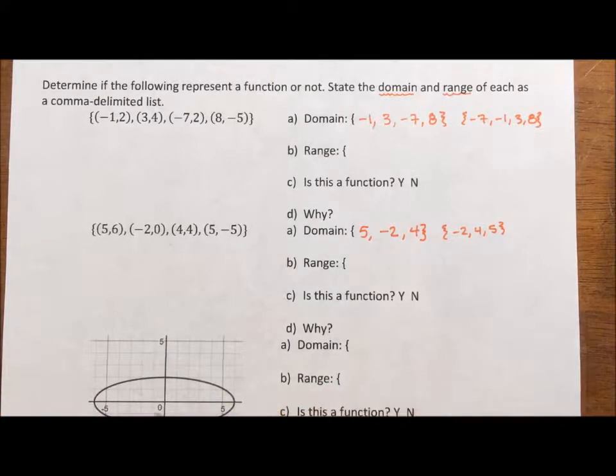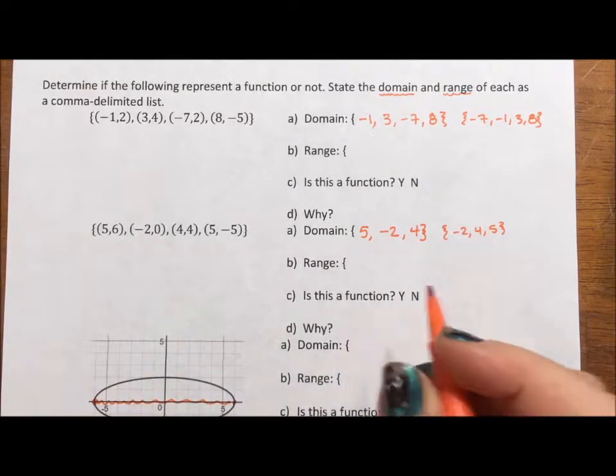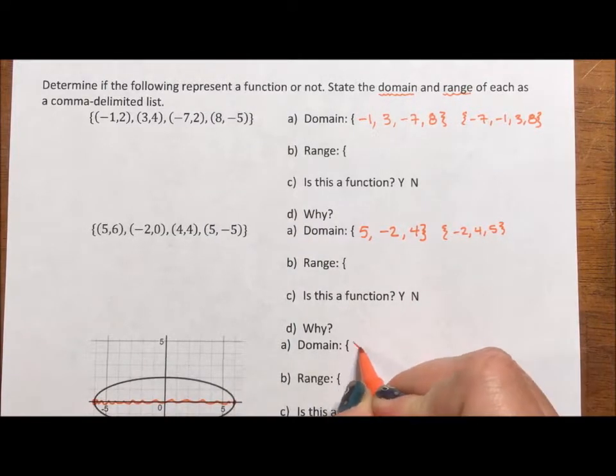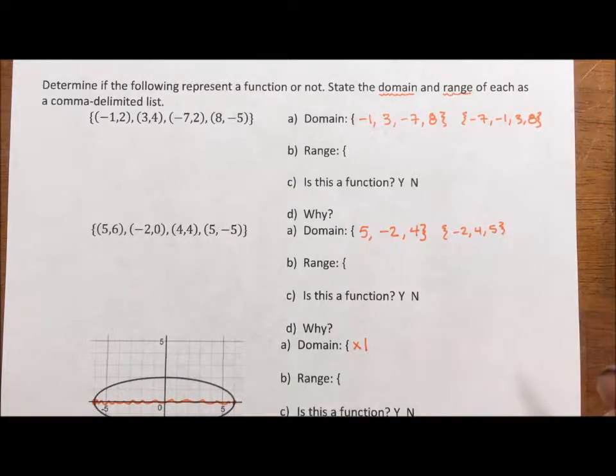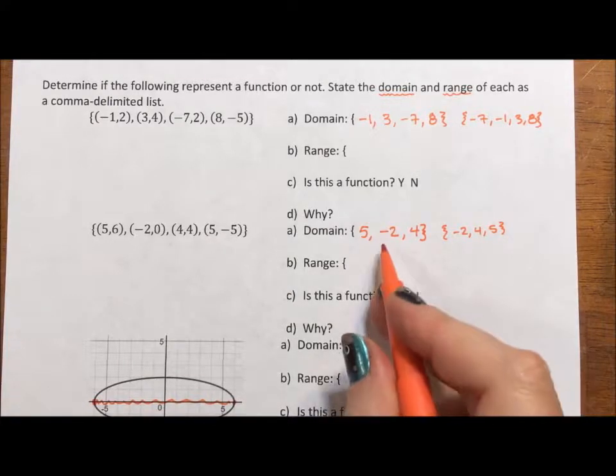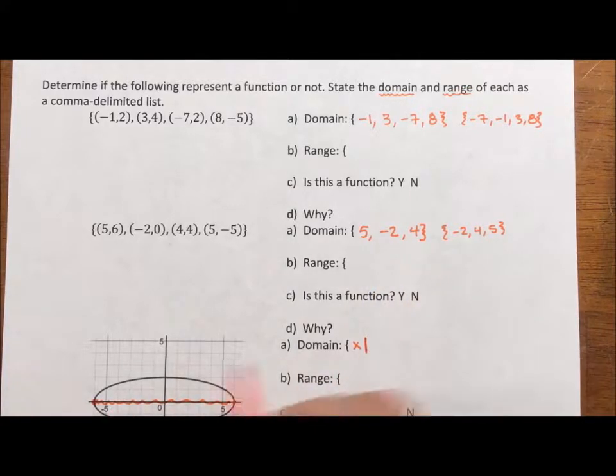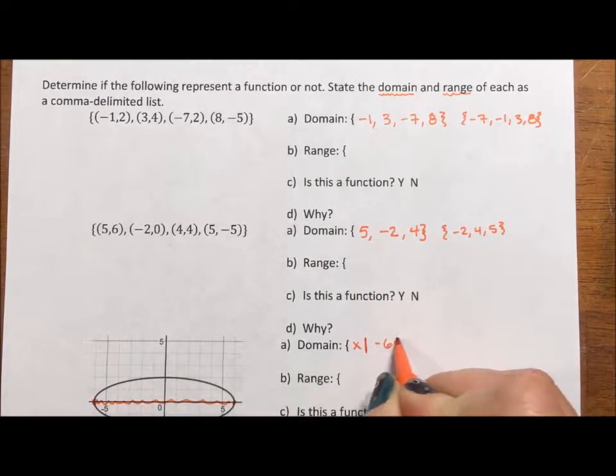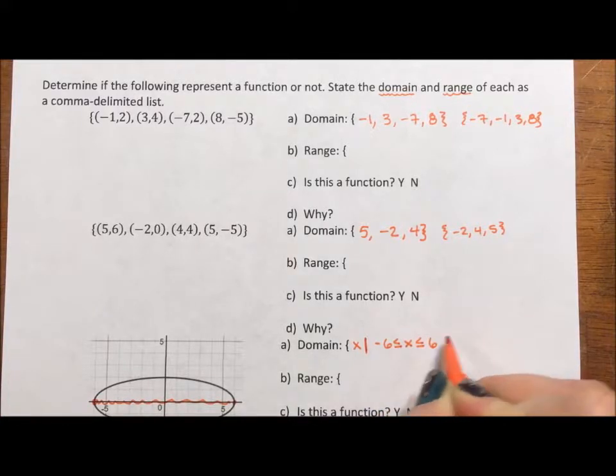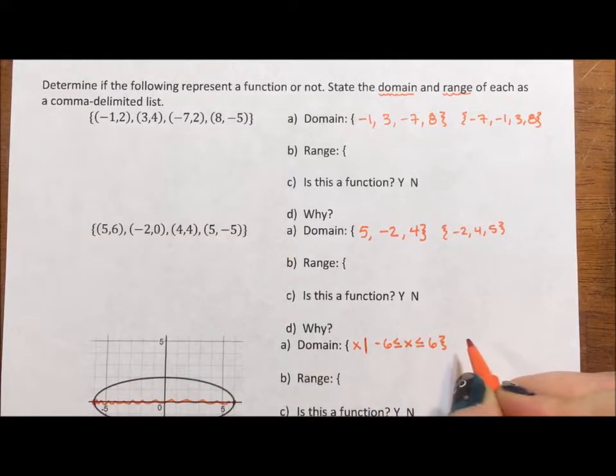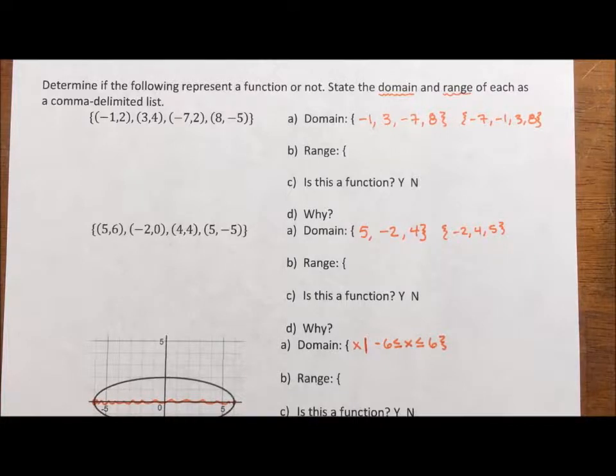For this domain, our x values is everything from here to here. So our domain is actually, we're going to do a different kind of set notation. We're going to say x such that. That just means we're going to define x, not as a laundry list, but as a description. This notation with this line says we're going to describe x. We're not going to list the finite elements because the elements are not finite. x is from negative 6 to positive 6. And I'm going to use inequality for that. And I still use my set notation.